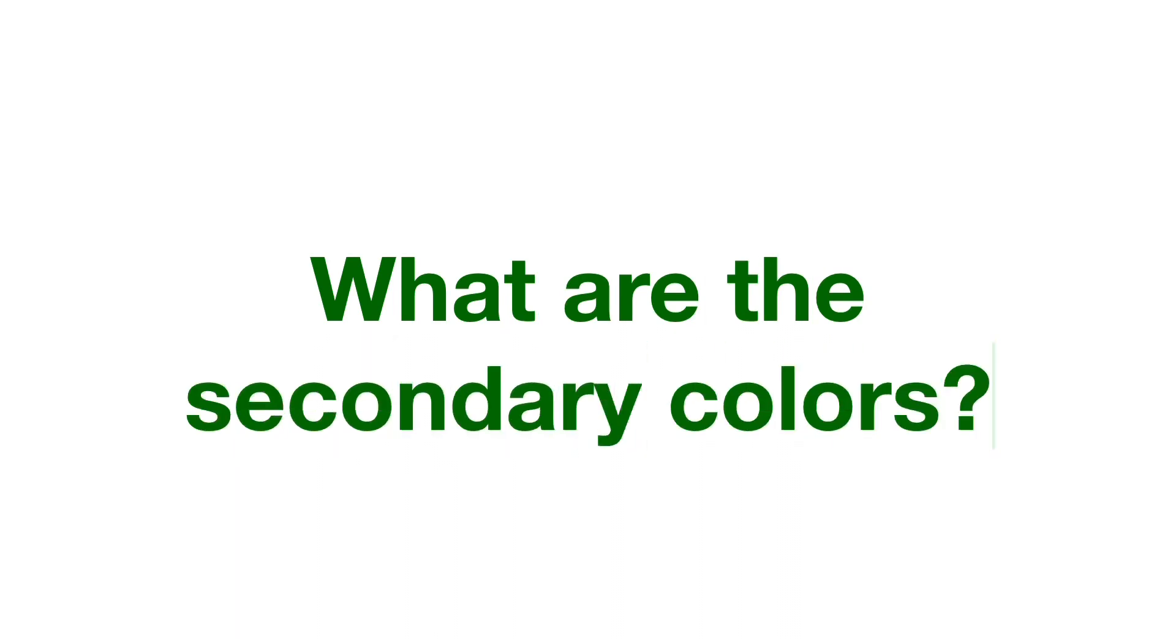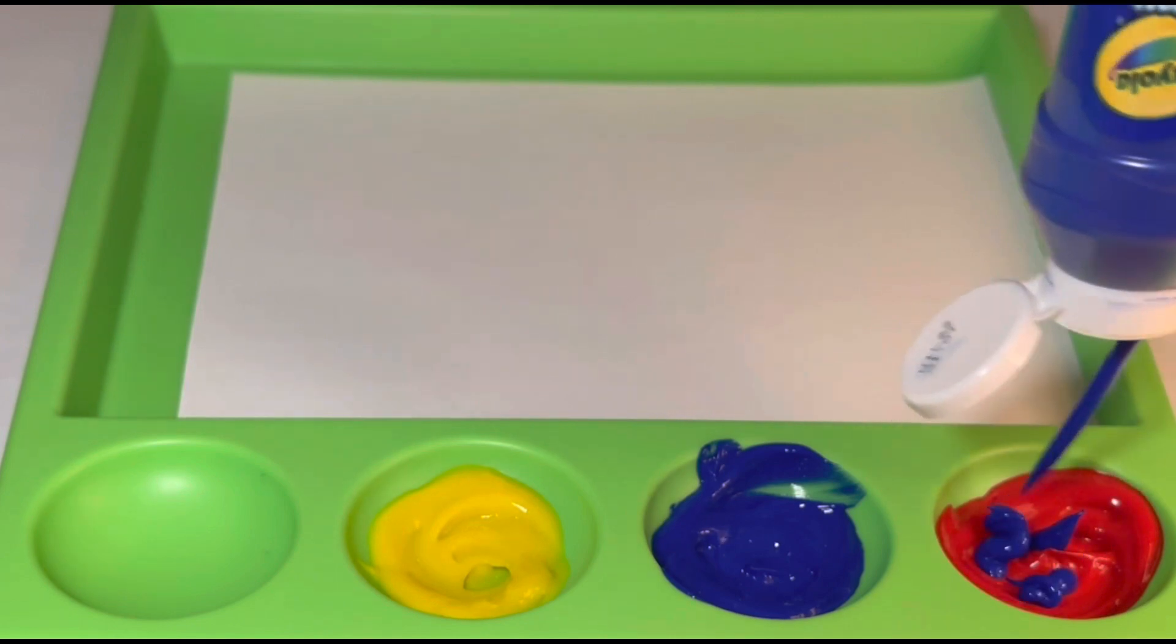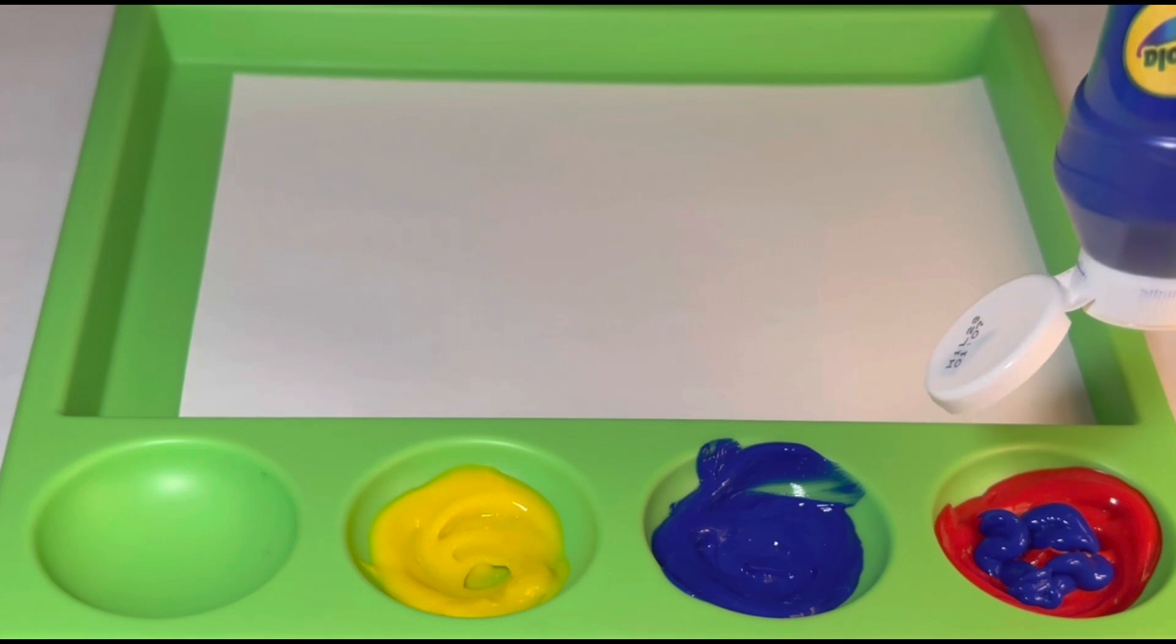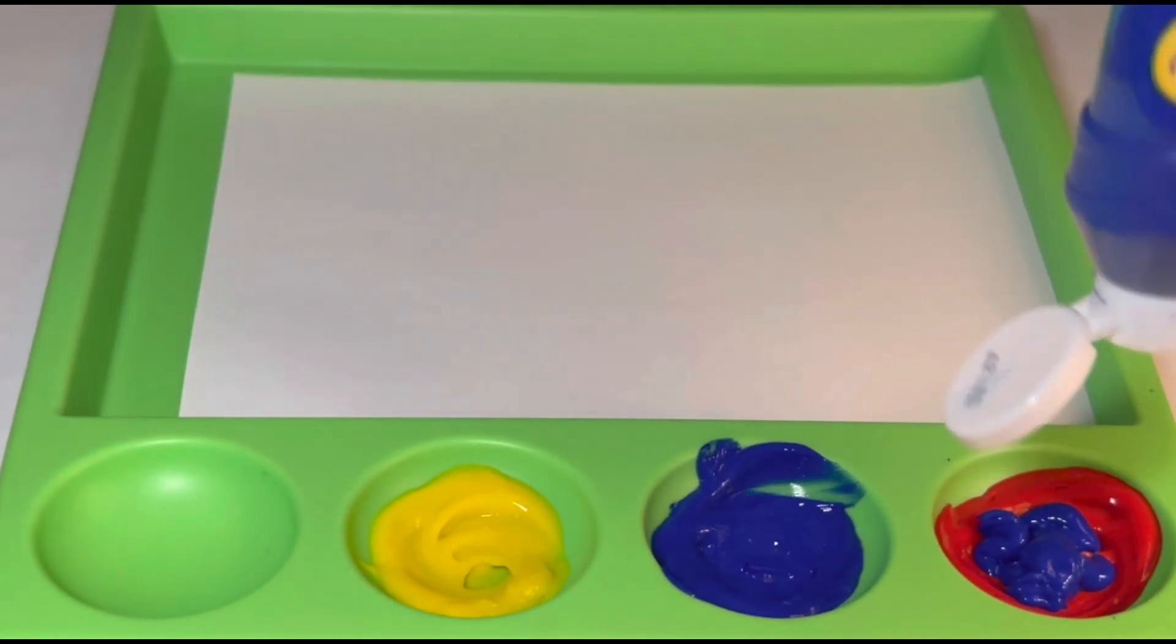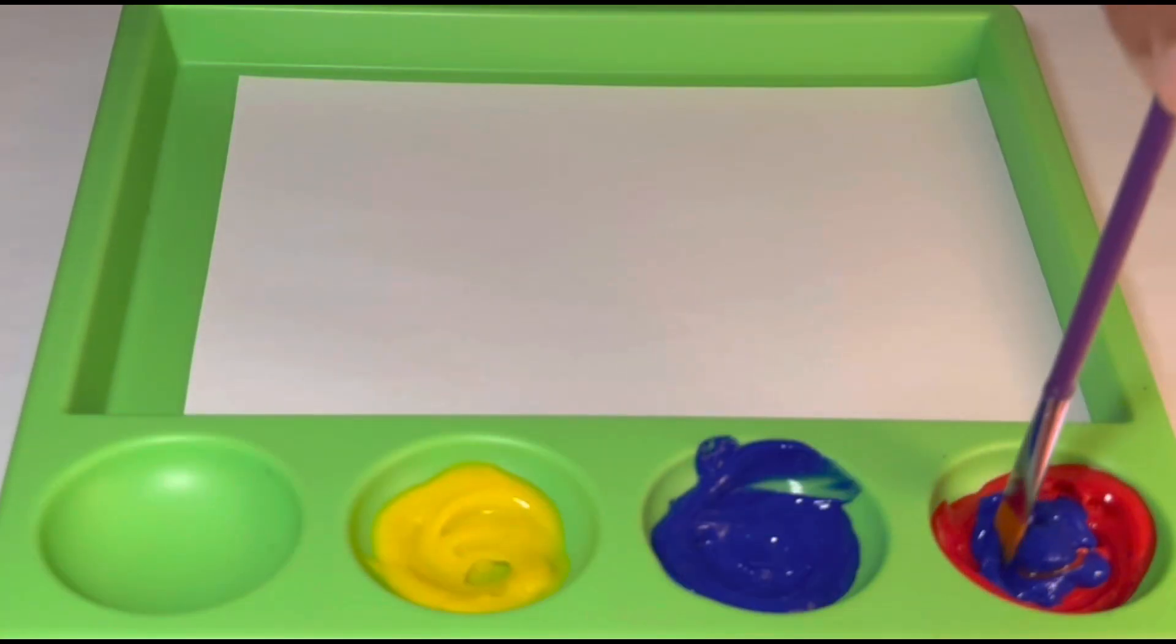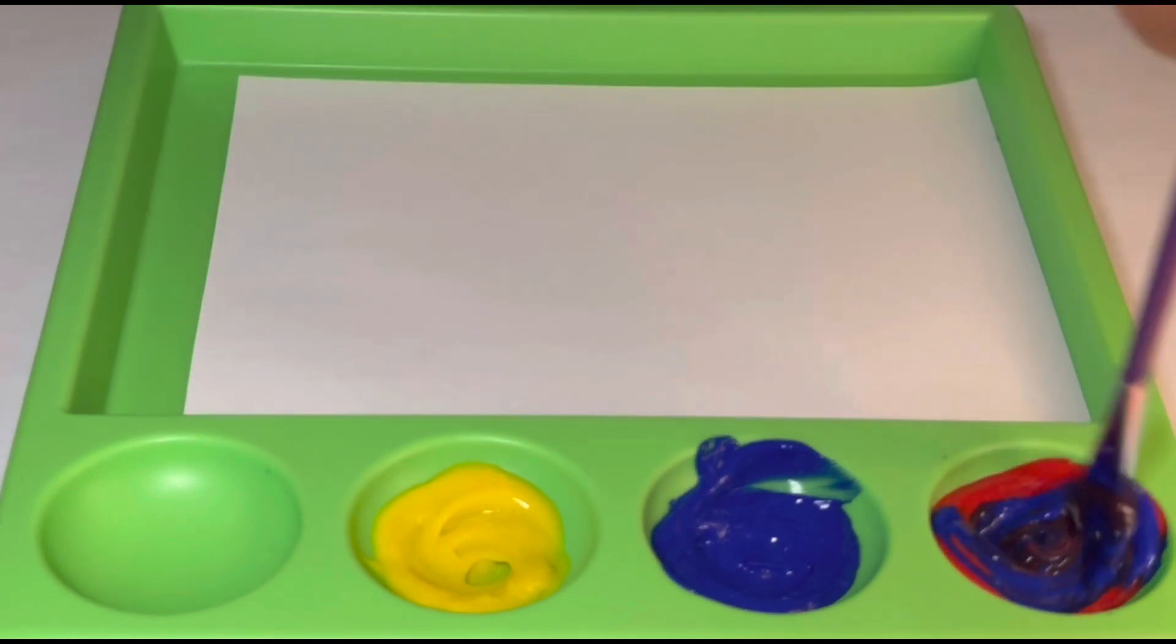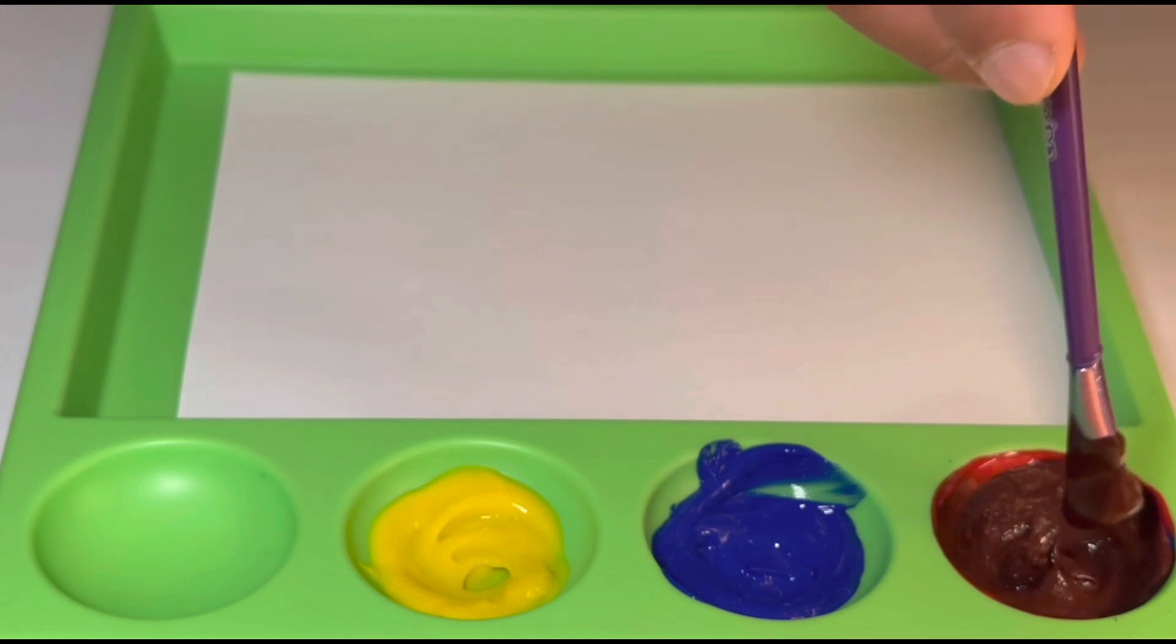What are the secondary colors? To get our first secondary color, we're going to have to mix red and blue. When mixing red and blue, we'll get a nice vibrant color, which is purple.